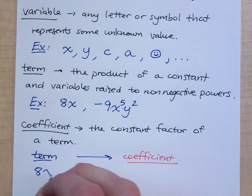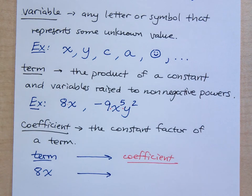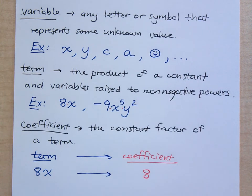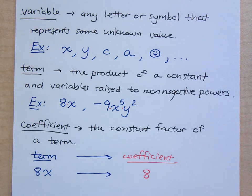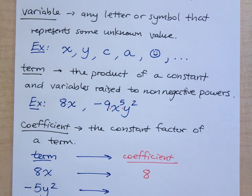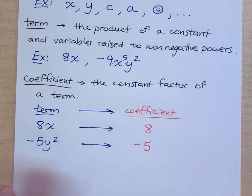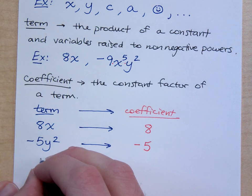If I were to say 8x, what's the coefficient — what's that constant factor? It's 8. It's basically saying how many x's do you have: 8x's, 8 times x. You could look at 8x as x plus x plus x plus x plus x plus x plus x plus x — 8 additions of x. If you keep adding the same number over and over, that leads to multiplication. If I were to say negative 5y squared, what is the coefficient? It's not 5 — it's negative 5.